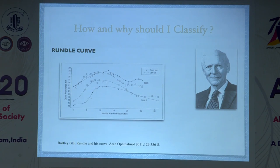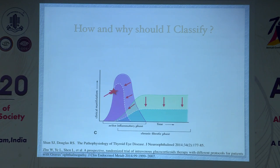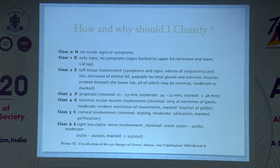Understanding Rundle's curve is very important. Typically, thyroid disease patients have a progressive stage in the first 12–18 months, followed by a chronic fibrotic phase. Treating in the active inflammatory phase reduces the ultimate sequelae of the chronic fibrotic phase. However, reactivation or recurrence may happen in the inflammatory phase, since steroids are short-acting, and reactivation can even occur after surgical decompression once the chronic fibrotic phase has set in.